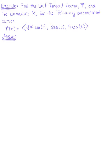Find the unit tangent vector, capital vector T, and curvature k for the following parametrized curve. We are given the vector-valued function r of t defined by the square root of 7 times sine of t, 3 sine of t, and 4 cosine of t.